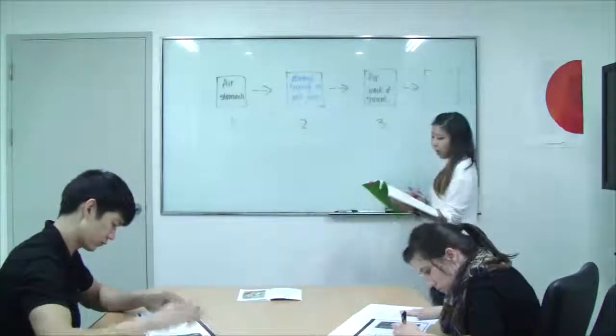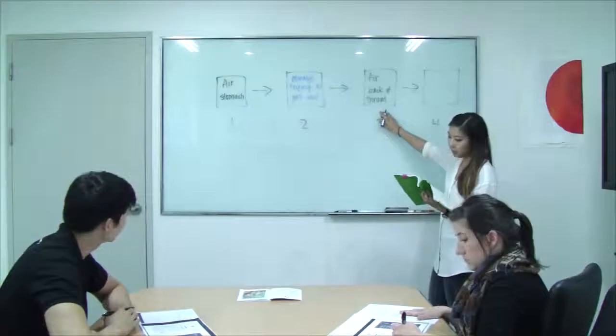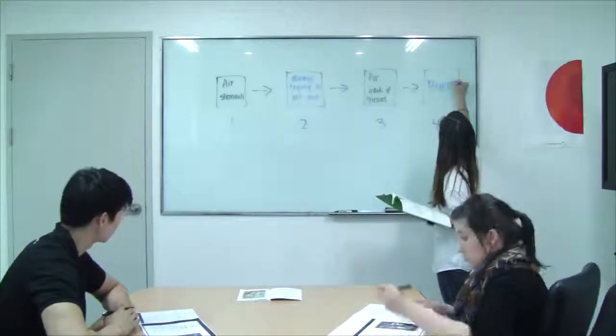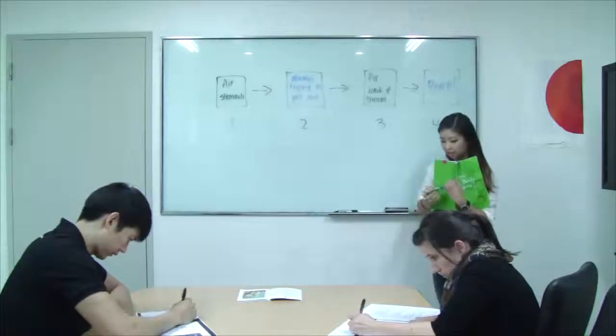All right, and what happens after sentence number three? Min? Bark. All right, and again, go ahead and write that in the box.